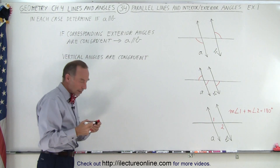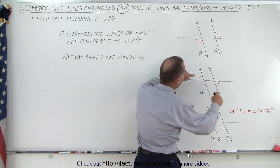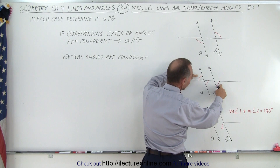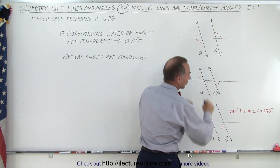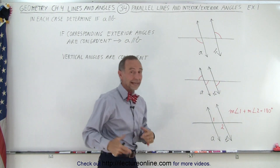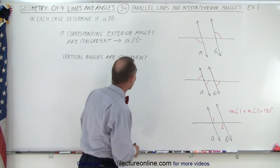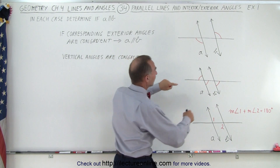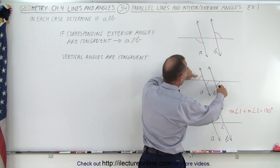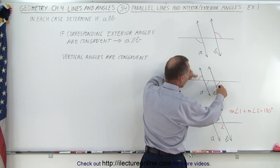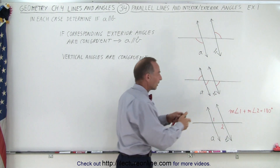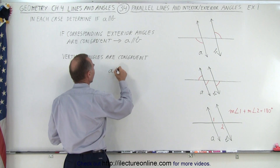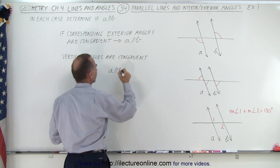So now you can see that again I have what we call two corresponding exterior angles and they are clearly congruent as well. Just like in case number one, we can see that the two corresponding exterior angles are congruent and therefore I can conclude that A must therefore be parallel to B.